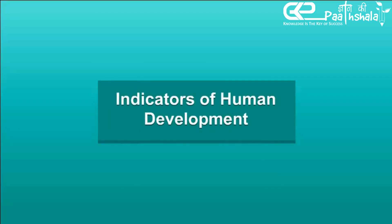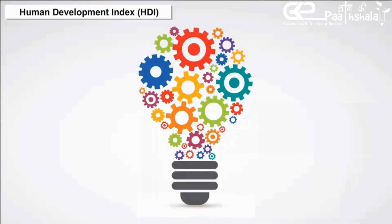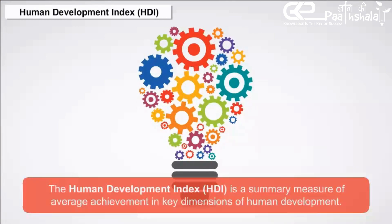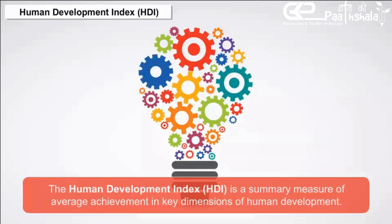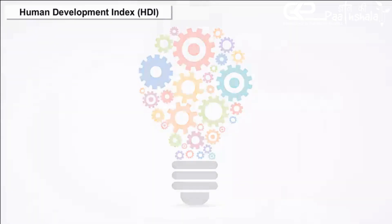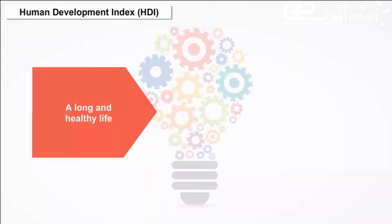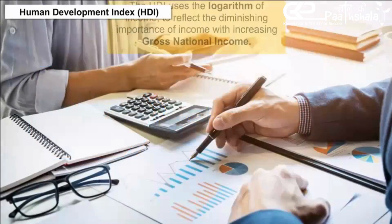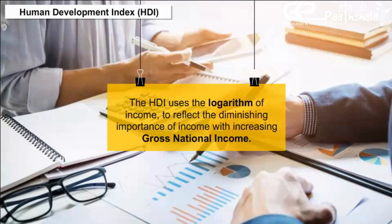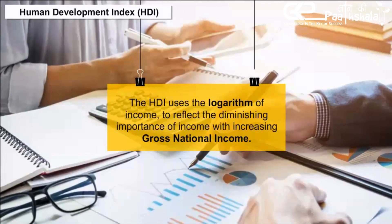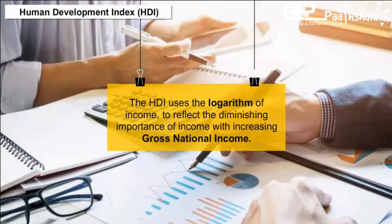Indicators of Human Development — Human Development Index. The Human Development Index (HDI) is a summary measure of average achievement in key dimensions of human development: a long and healthy life, being knowledgeable, and having a decent standard of living. The HDI uses the logarithm of income to reflect the diminishing importance of income with increasing gross national income.